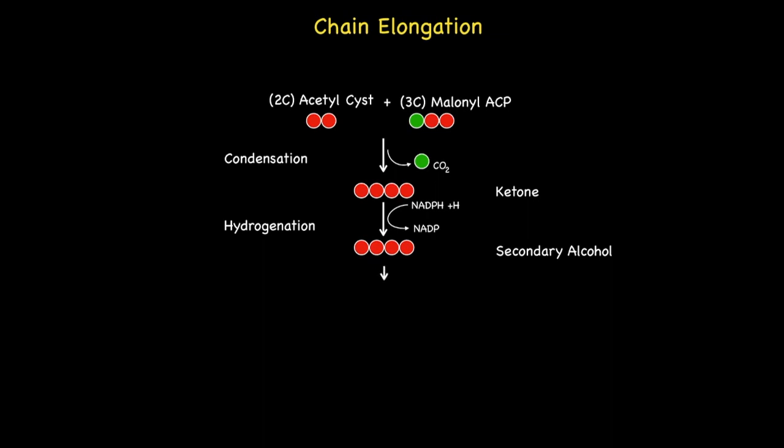During the third step, the secondary alcohol undergoes a dehydration reaction, losing water, which in turn creates a carbon-to-carbon double bond to give an alkene.